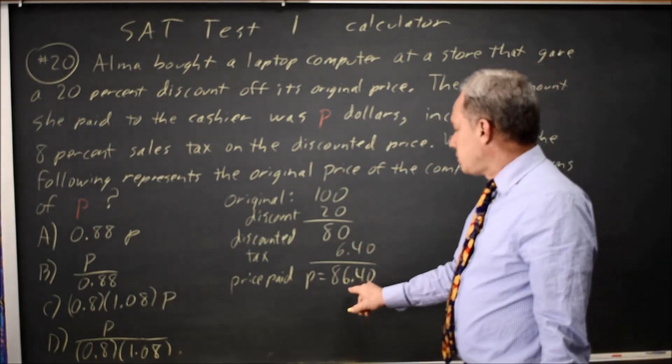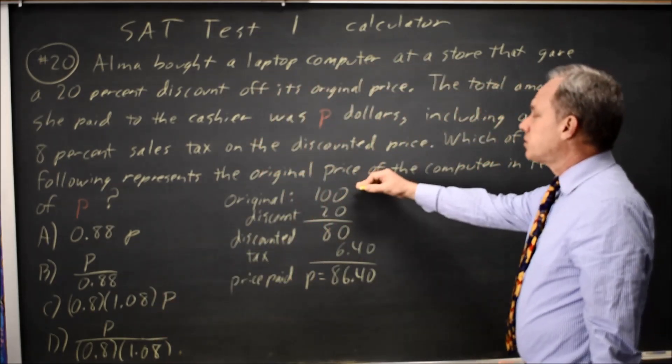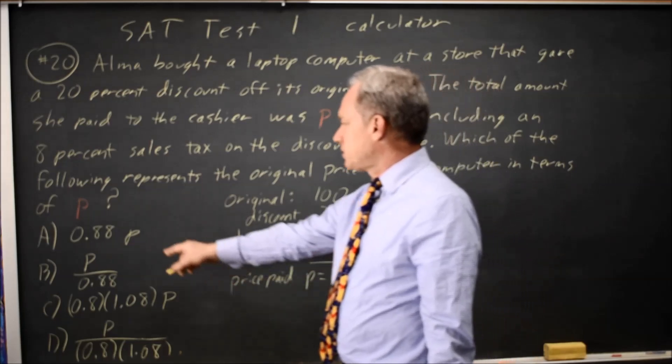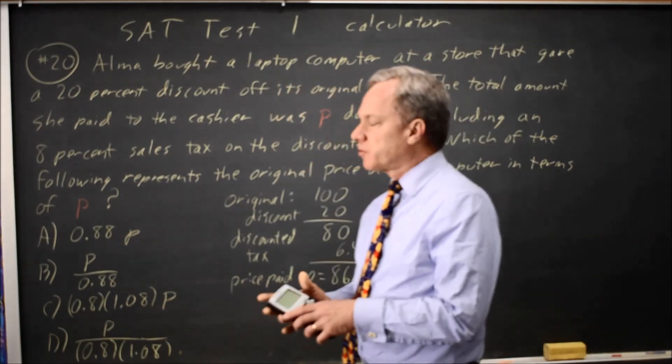Now I can use this in each choice. They're asking which of the following represents the original price. So if I put P equals 86.40 into each of these, the one that gives me $100 will be the correct answer.